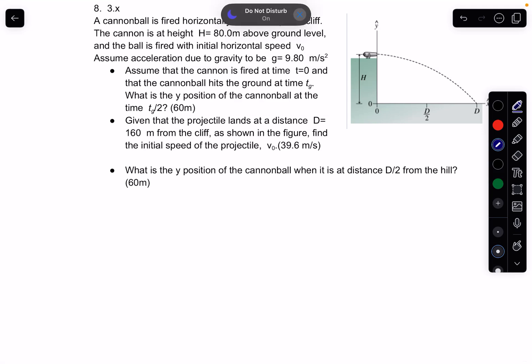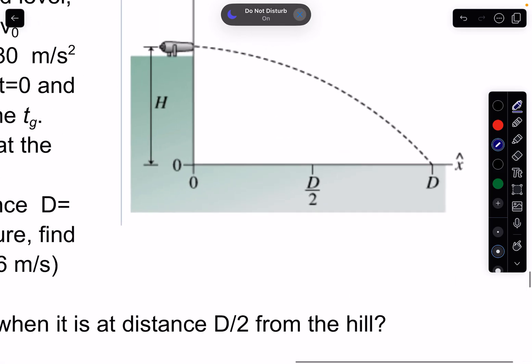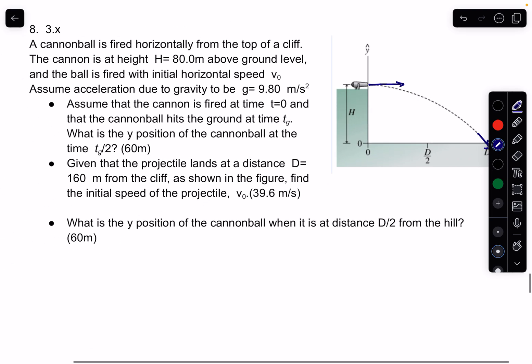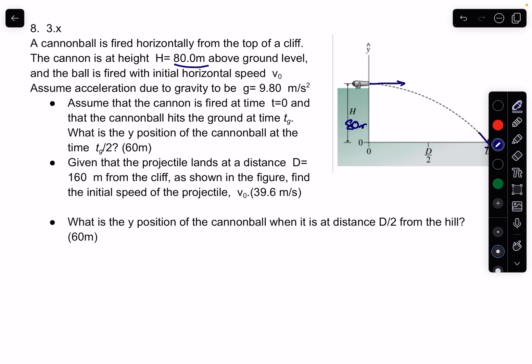So we've got a cannonball. We've got a diagram over here. That's pretty cool. So it's being shot horizontally. We get a lot of these problems where they're shooting horizontally, but of course it's going to arch down and land down here. We've got that kind of all figured out. And we know its height. The height there, it says, is 80 meters.